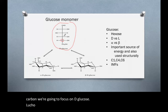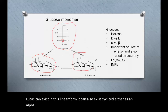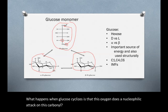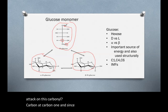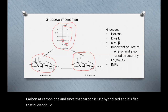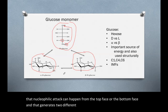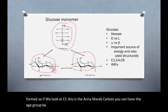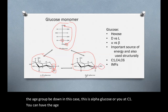Glucose can exist in a linear form, or it can also exist cyclized, either as an alpha glucose or a beta glucose. What happens when glucose cyclizes is that this oxygen does a nucleophilic attack on the carbonyl carbon at carbon 1. Since that carbon is sp2 hybridized and flat, that nucleophilic attack can happen from the top face or the bottom face, generating two different configurations in the new molecule. If we look at C1, this is the anomeric carbon. You can have the OH group be down — in this case, this is alpha glucose — or at C1, you can have the OH group be up, in which case it's beta glucose.